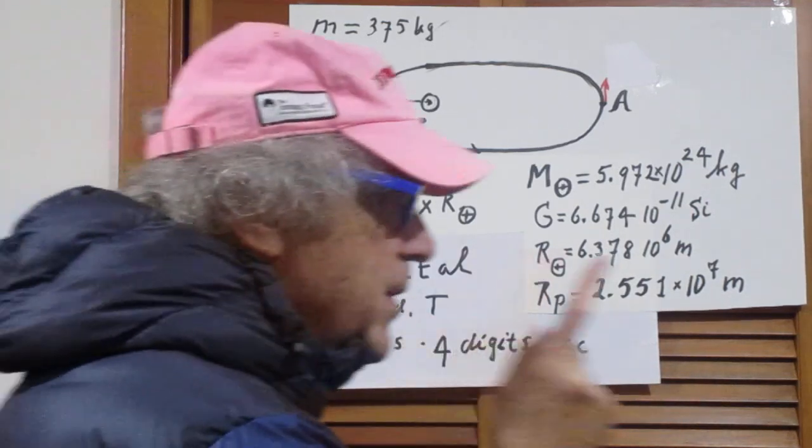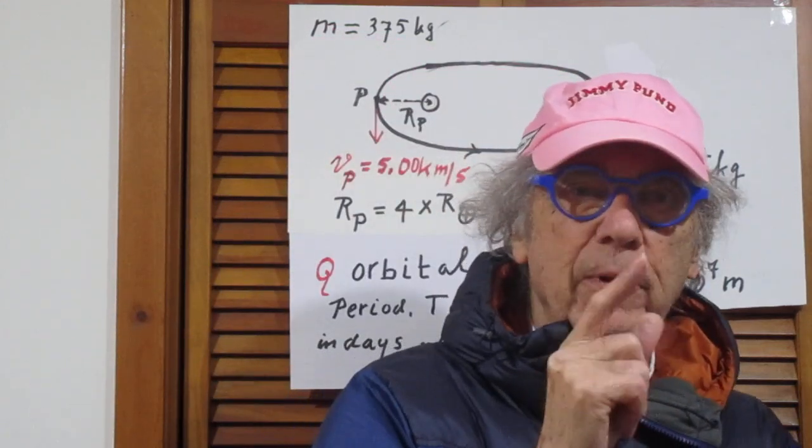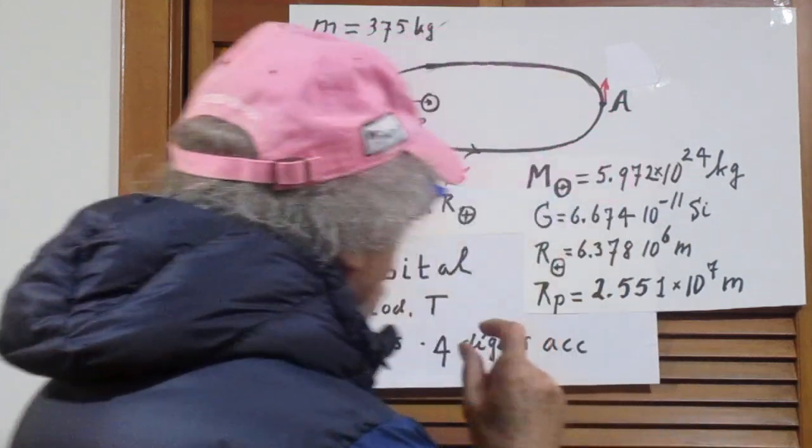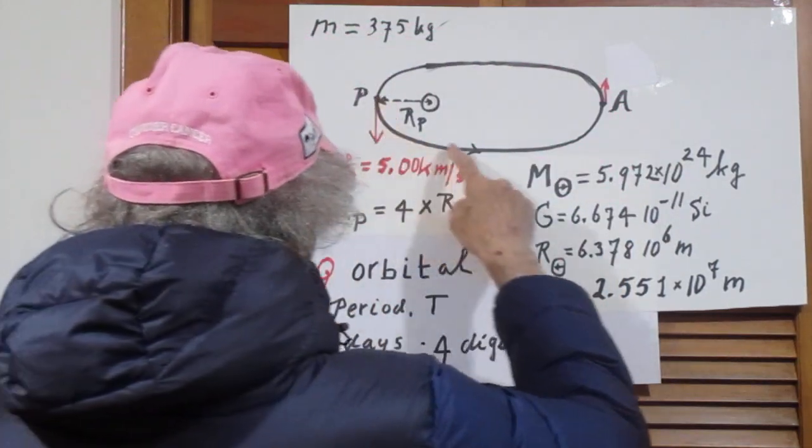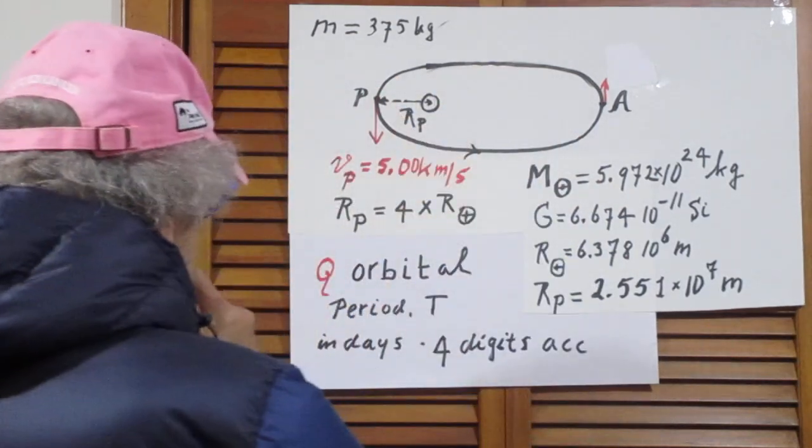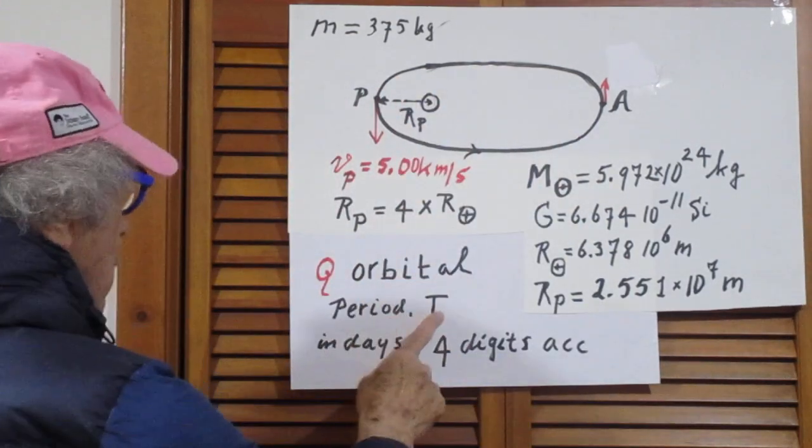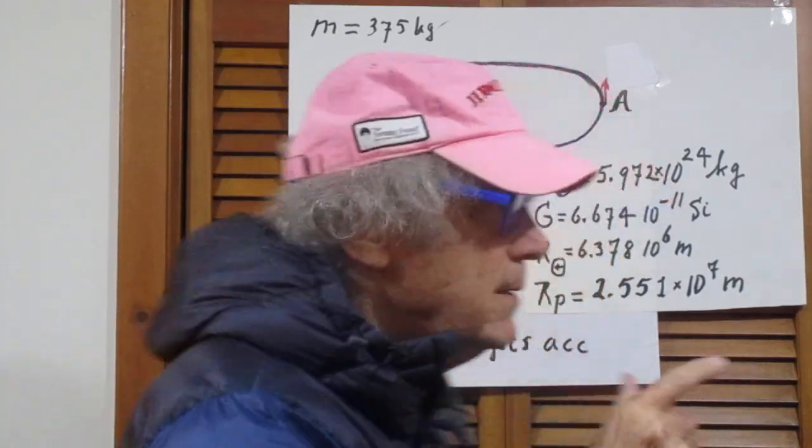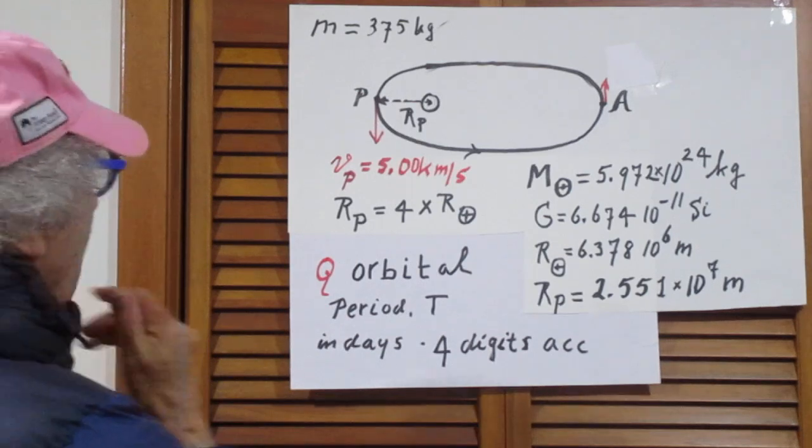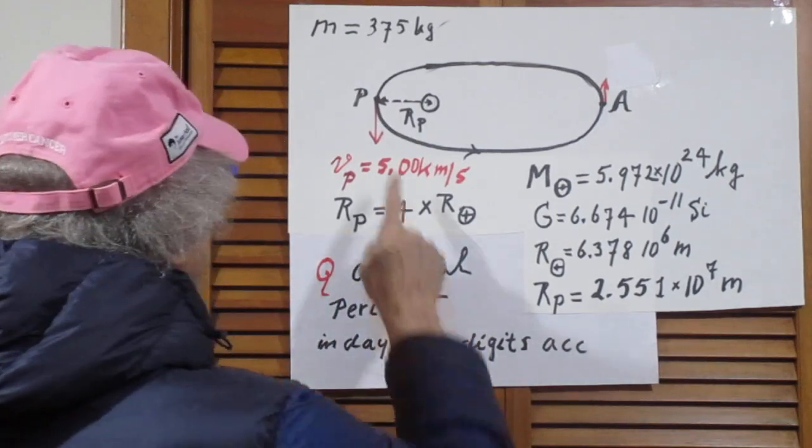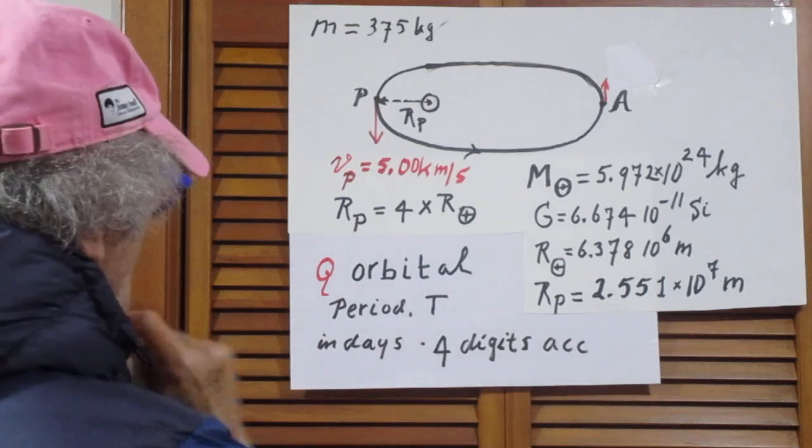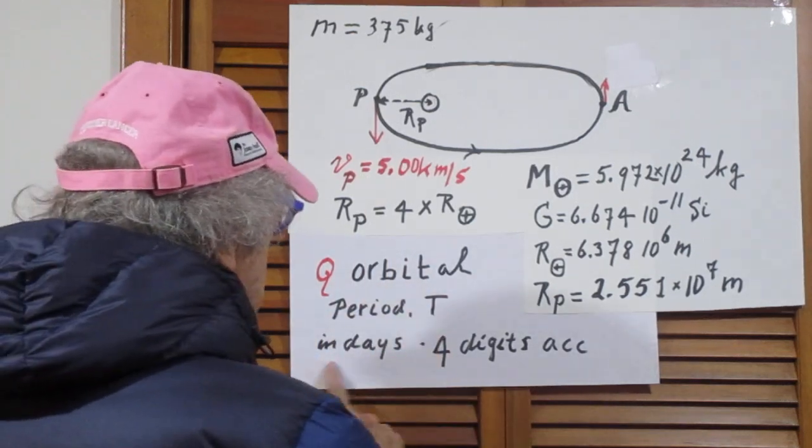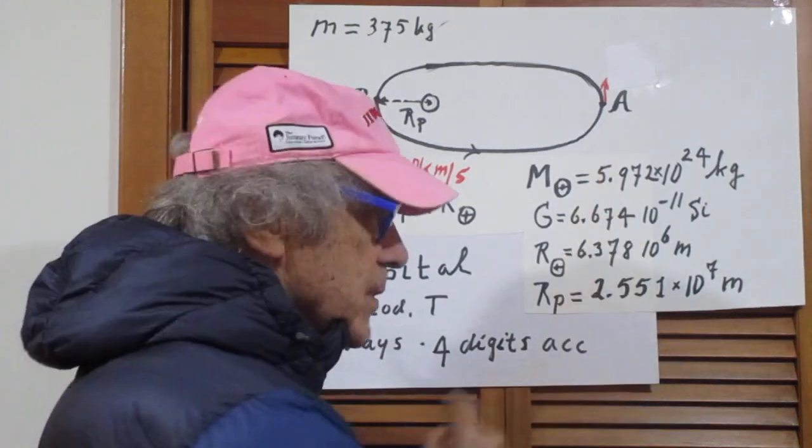The question now is what is the orbital period of that satellite? How long does it take the satellite to make one complete rotation? We call that the orbital period and I will give it the letter capital T, T as in Tone. I will not call it P as in Peter because that's confusing with this P. So what is the orbital period capital T and I want it in days with four digit accuracy.